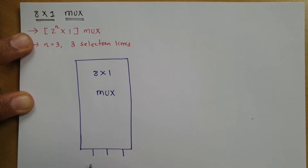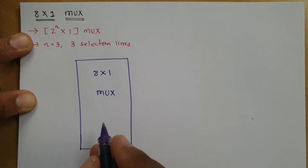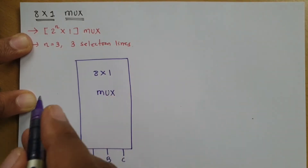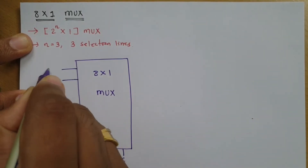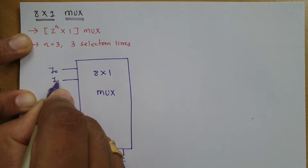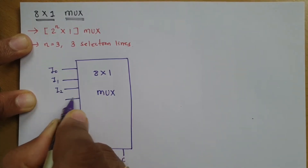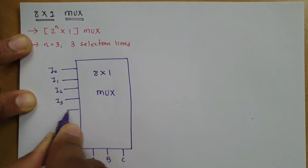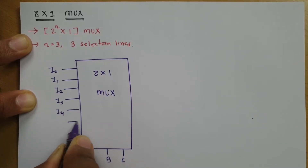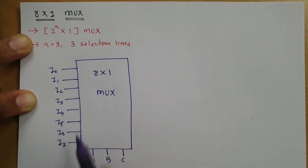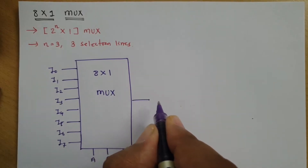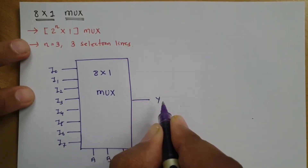Let us say the selection lines are A, B, and C. As it is an 8x1 multiplexer, we have a total of 8 input lines: I0, I1, I2, I3, I4, I5, I6, and I7. So, total 8 input lines are there and here we have 1 output line.